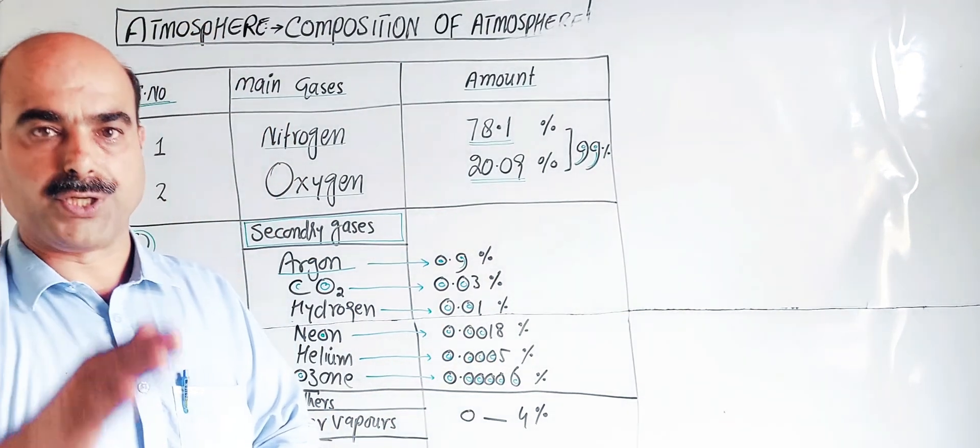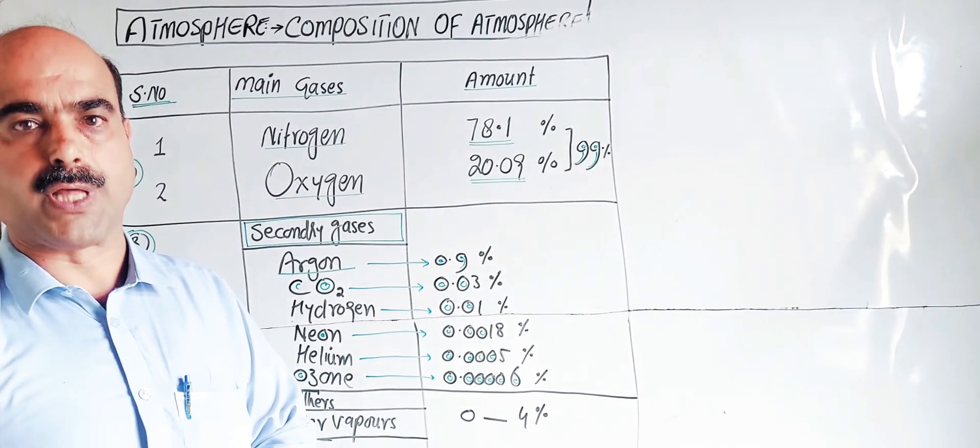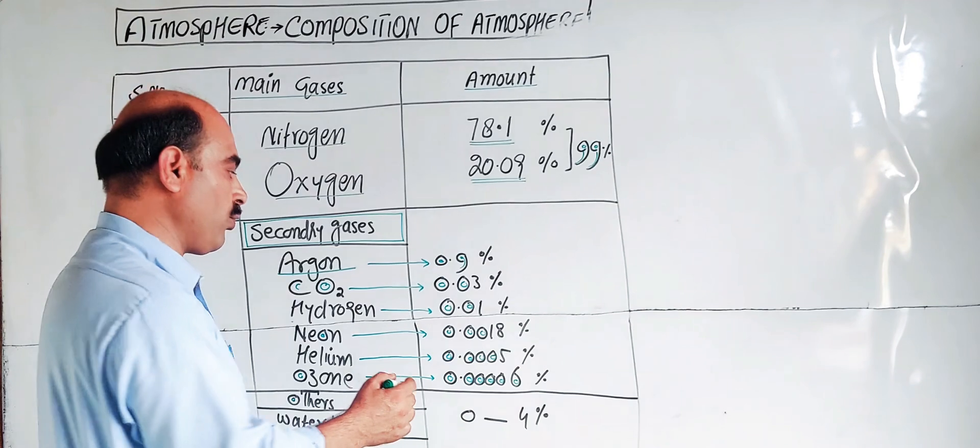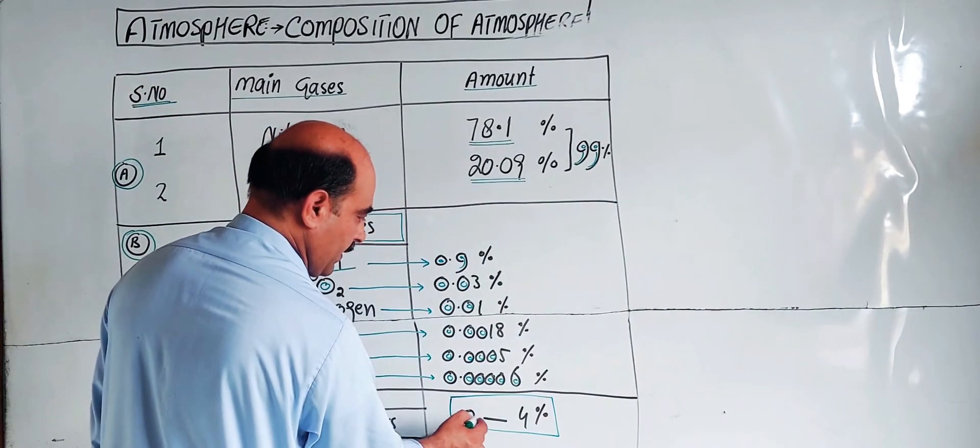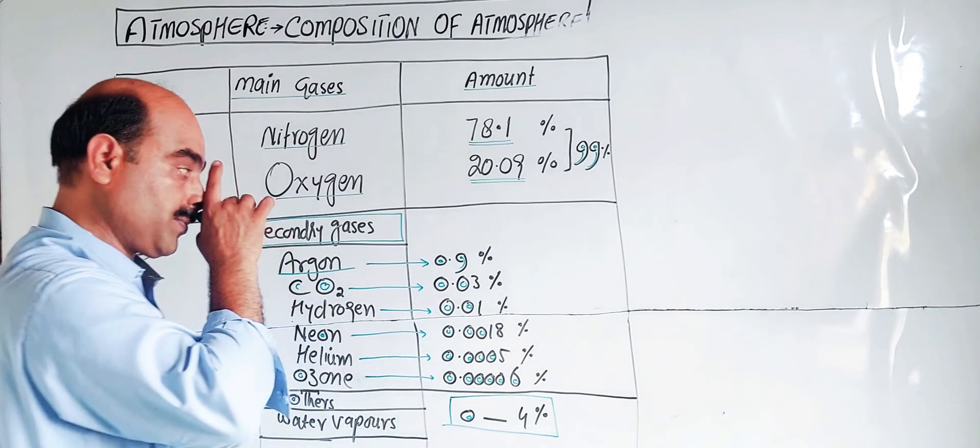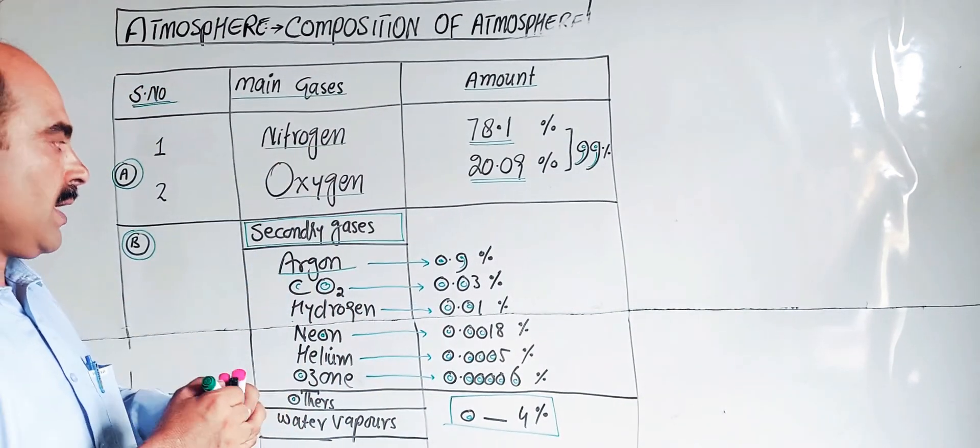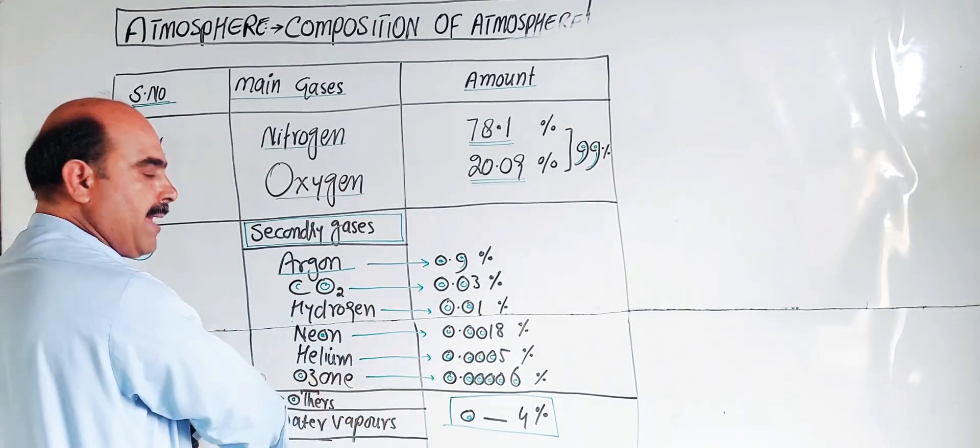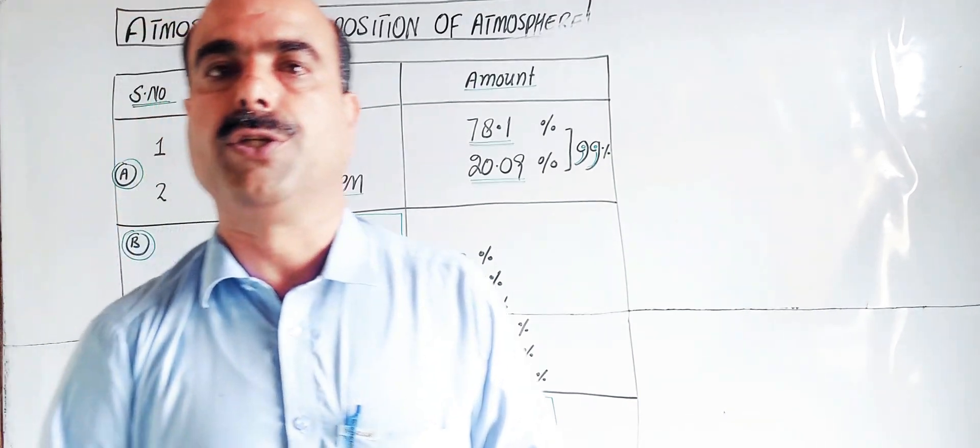Water vapors are variable. They change from place to place - in humid areas there will be more water vapors, in dry areas there will be less. Therefore, normally the range of water vapor is from 0 to 4%. This is the composition of atmosphere with both major and minor components being variable.